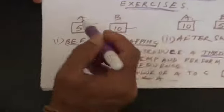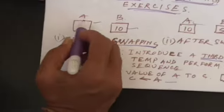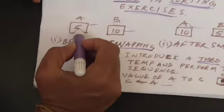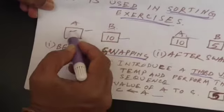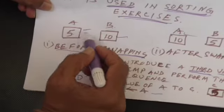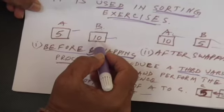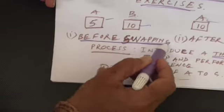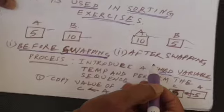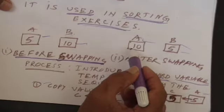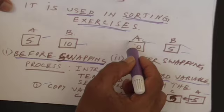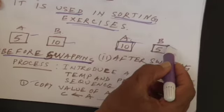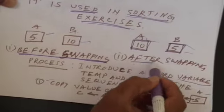When you look at two variables, say variable A and variable B, the values present initially are: A contains value 5 and B contains value 10 — this is before swapping. After you complete the process, A is supposed to contain value 10 and B is supposed to contain value 5 — this is after swapping.